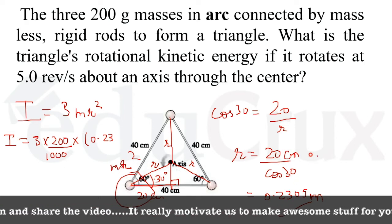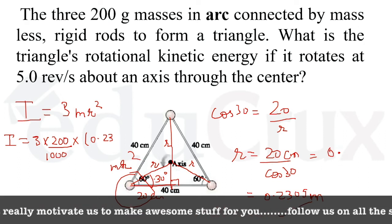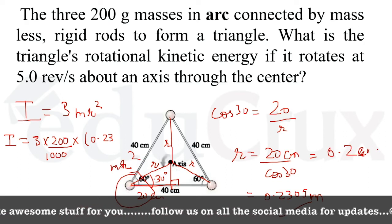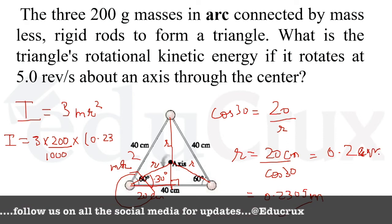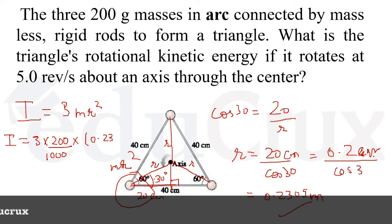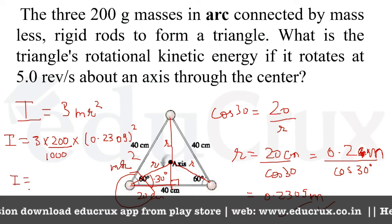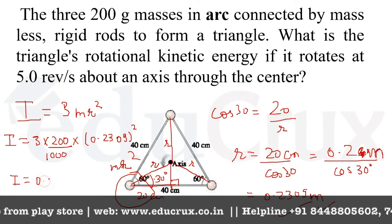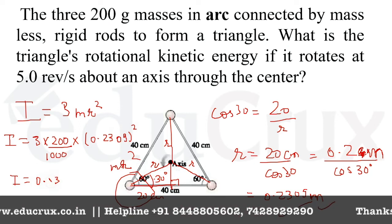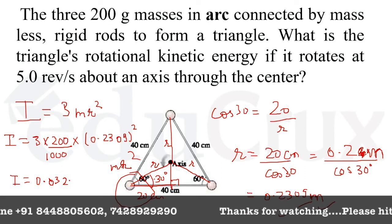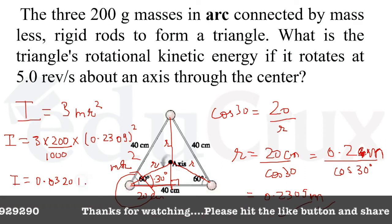Here it's 20 centimeters. What we have done is converted 20 centimeters into 0.2 meters and then divided by cos 30. We've changed our units into SI units for r, so we multiply 0.2309 squared. When you calculate I, you get 0.0320 kilogram meter squared.